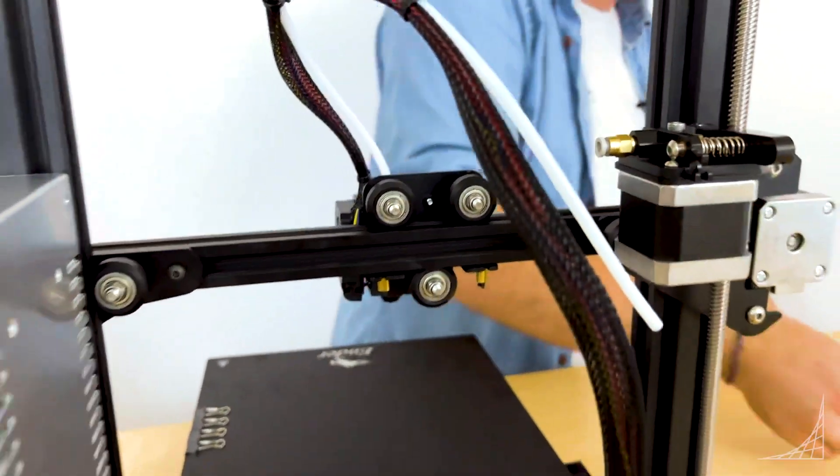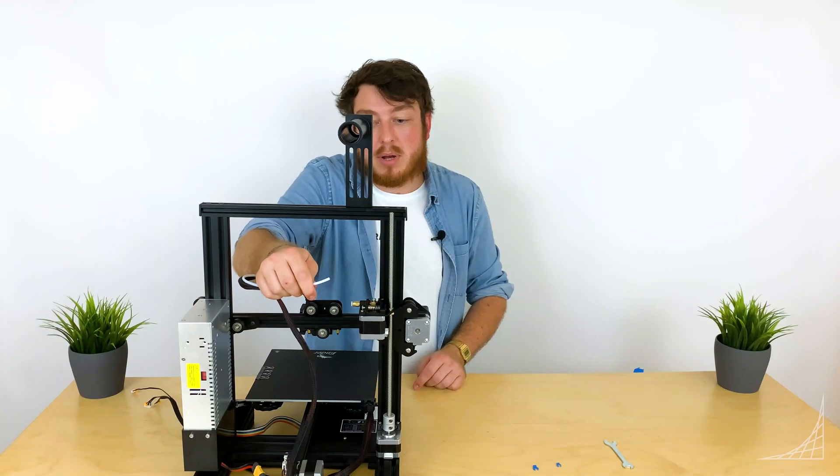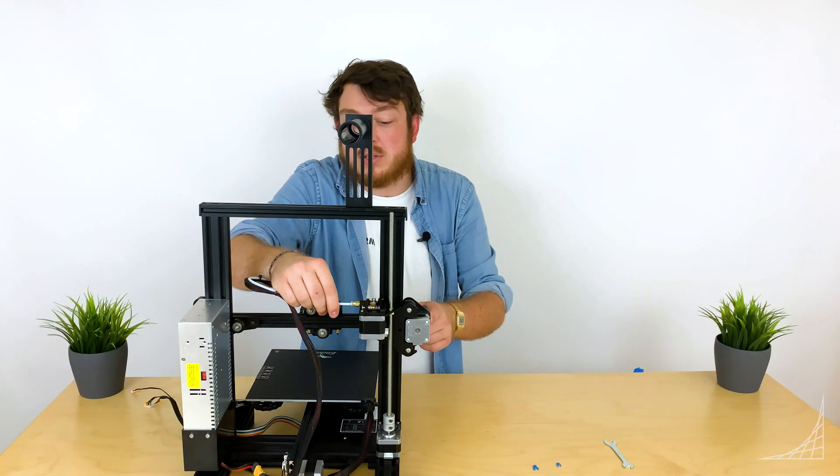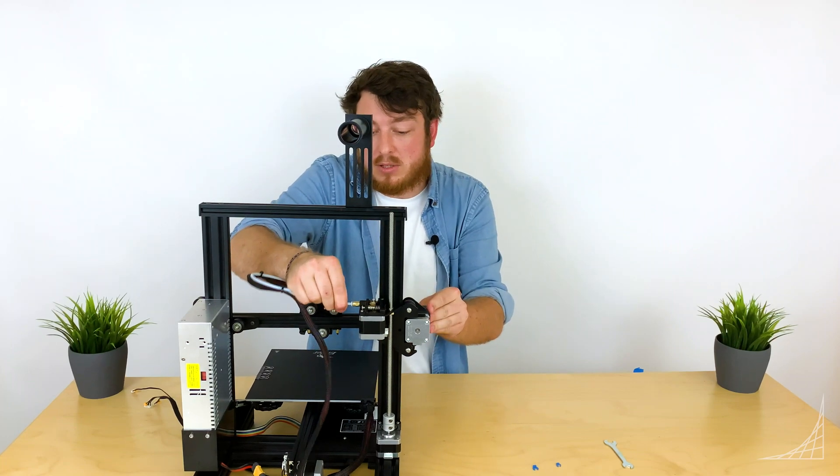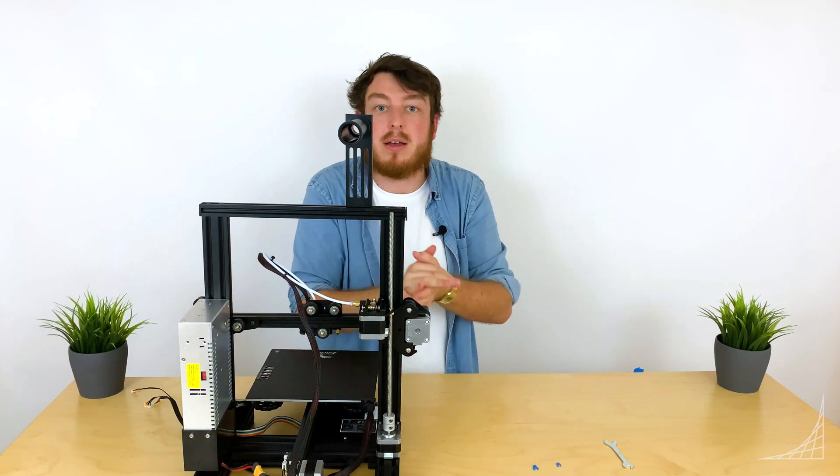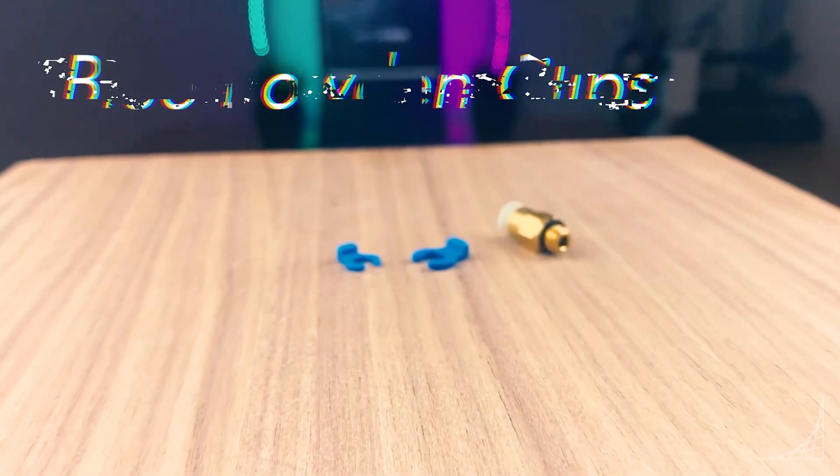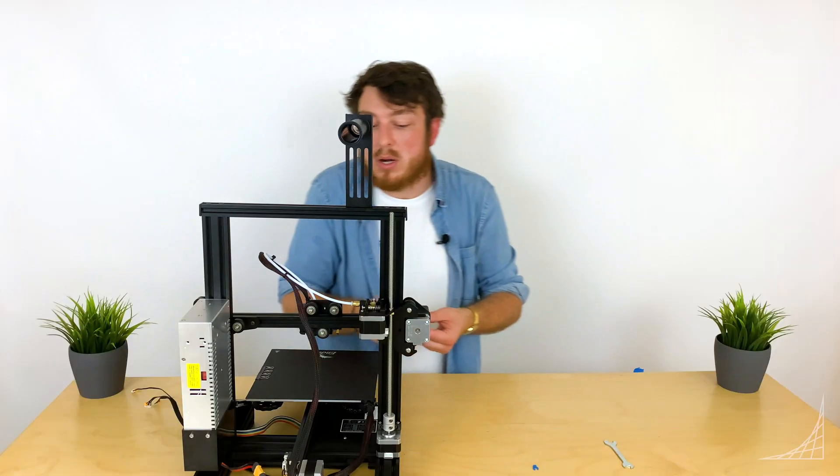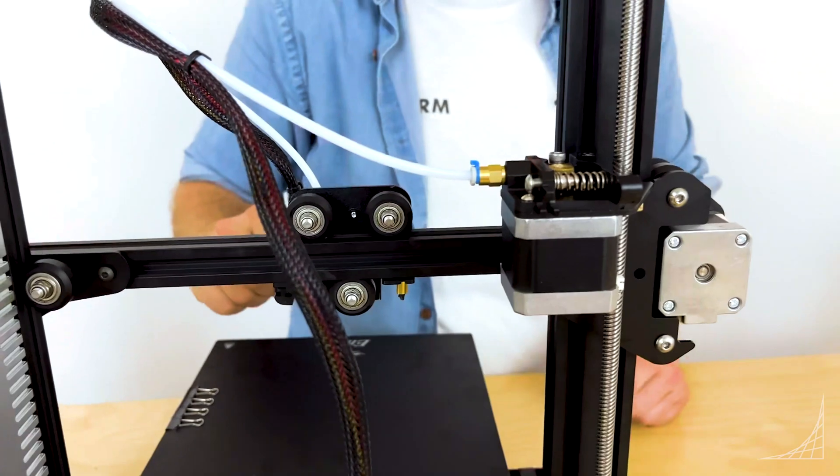Then we can grab our PTFE tube and insert it in. It's really important: you want to push it in as deep as you can until you feel it kind of hit the dead end of it. Then we can grab one of these blue clips—you want to go for the smaller one—and we're going to insert it in between that gap there.